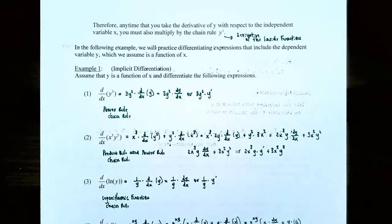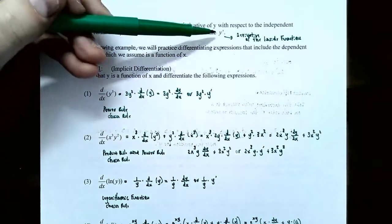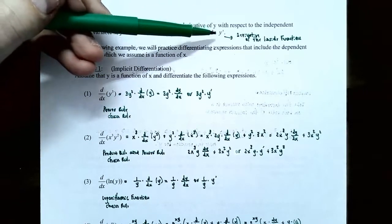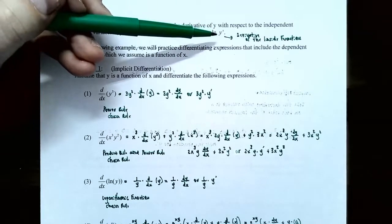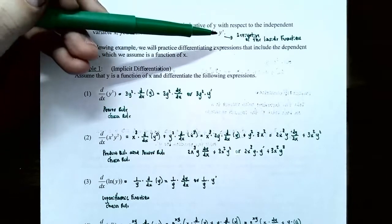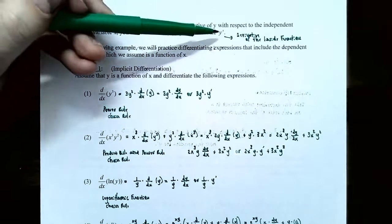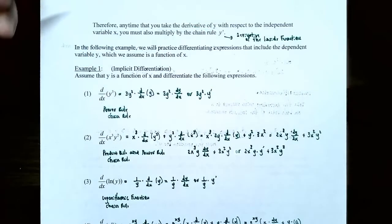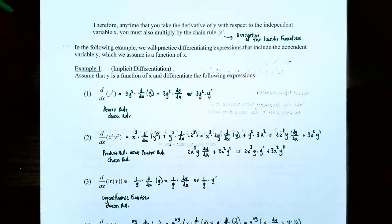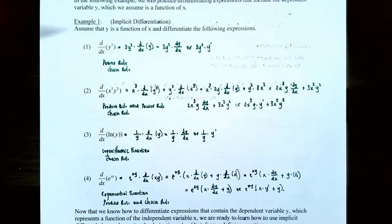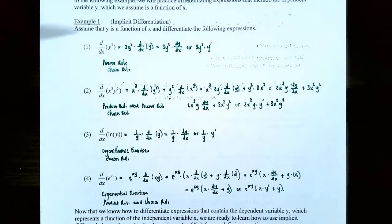Every time you take a derivative of y with respect to the independent variable x, you must also multiply by the chain rule, which is y prime. The chain rule is the derivative of the outside function times the derivative of the inside function. Y is not just representing a variable — it's representing a function of x. Even though you don't know what y is, you need to take the derivative of that function, and y prime represents the derivative of the inside function. We're going to practice differentiating expressions that include the dependent variable y, where y is a function of x.